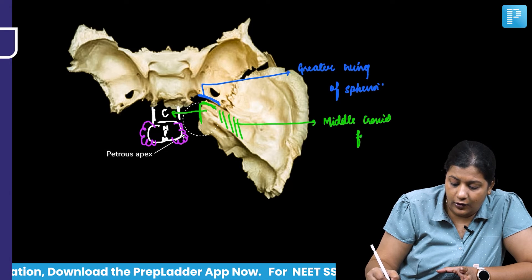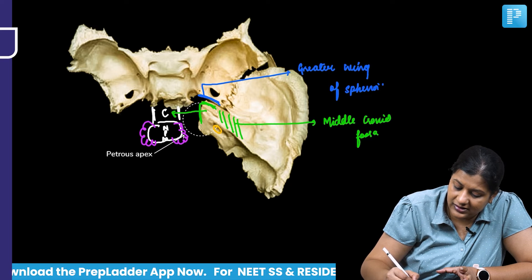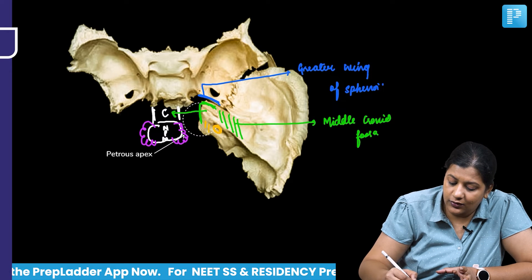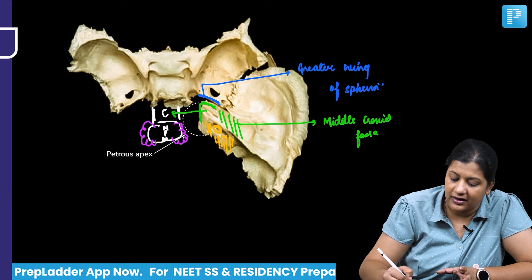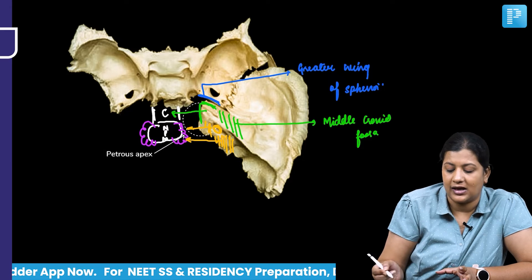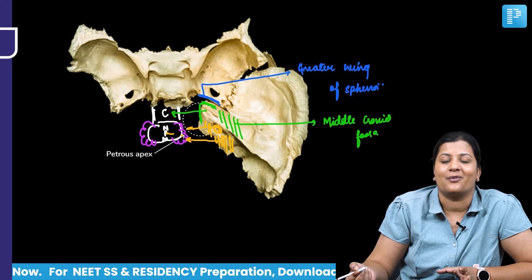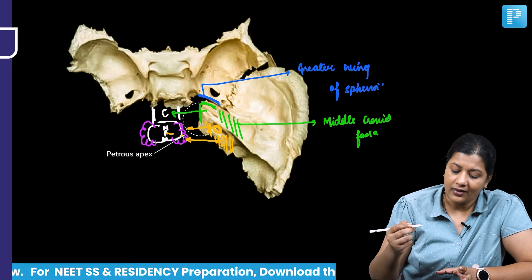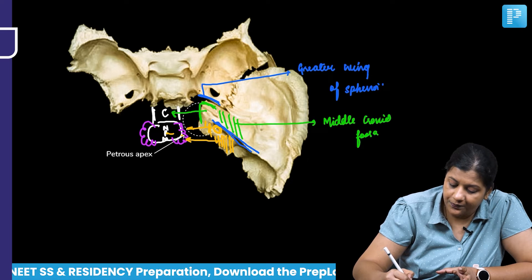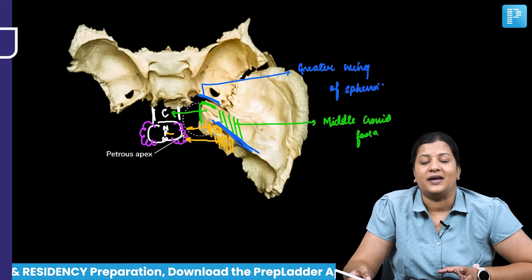The posterior surface contains the internal auditory canal. Medially, this posterior surface is in relation to the cerebellopontine angle, as the cerebellum relates to the pons at this location. The tentorium cerebri is attached superiorly to the ridge of bone present above.